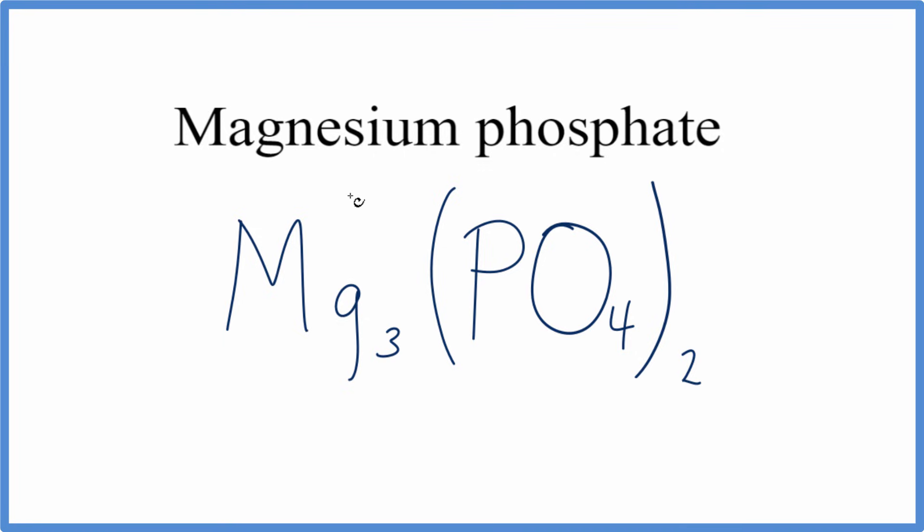We do need to check our work, though. Remember, magnesium was a plus 2. Phosphate was a minus 3. 3 times plus 2, that's plus 6. 2 times the minus 3, minus 6. Charges cancel out. Net charge is 0. This is the correct formula for magnesium phosphate. We'll clean it up a bit, and that's it.